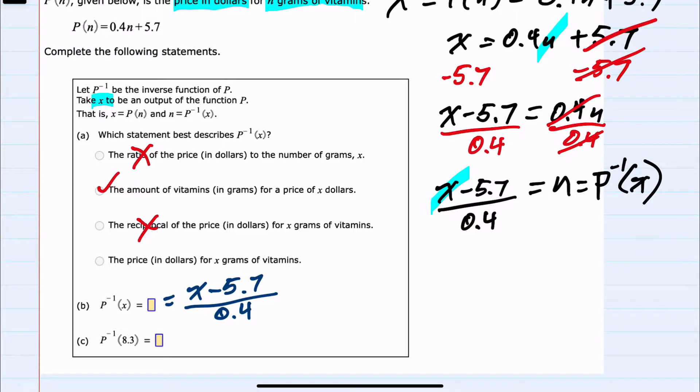For the last question, we're asked to find P inverse of 8.3. So we'll be replacing x with 8.3 in our inverse function.